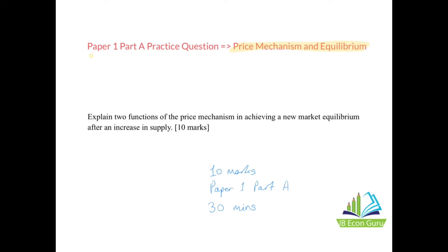The question I have is a Paper 1 Part A practice question worth 10 marks, and you should write an essay like this within 30 minutes. The question is: Explain two functions of the price mechanism in achieving a new market equilibrium after an increase in supply. You've been given a specific change in the market and you're supposed to explain how the price mechanism achieves a new equilibrium and explain the two functions. Let's get started and see how to construct an essay in response to that question.